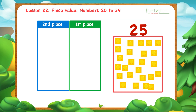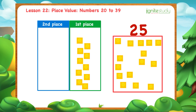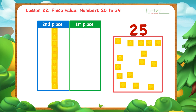I put blocks into the first place: 1, 2, 3, 4, 5, 6, 7, 8, 9, 10. Then, when I have 10 blocks, I group them together. Then, I move the group to the second place.